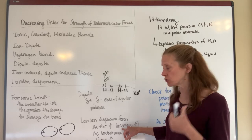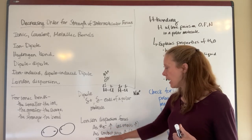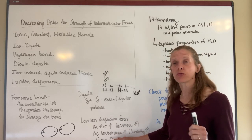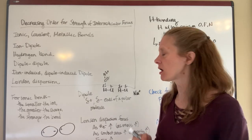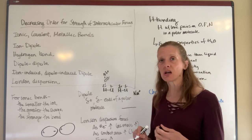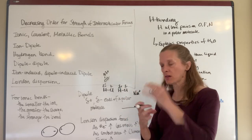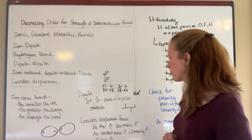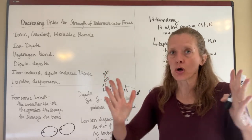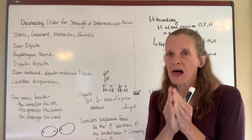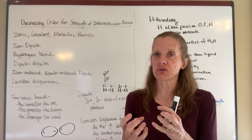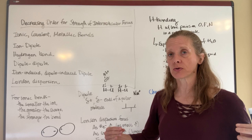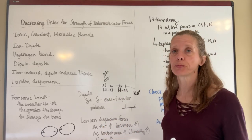London dispersion forces strengthen as the number of electrons in a molecule increases. The more electrons available, the greater the chance that this distortion will happen. As the mass of a molecule increases, the number of electrons goes up. Additionally, as the contact area, or linearity, of a molecule increases, the dispersion forces are stronger. More linear molecules can get closer to each other, making it more likely that the electron clouds will distort. So as mass goes up and linearity increases, the London dispersion force gets stronger.